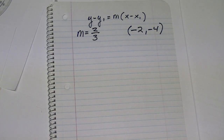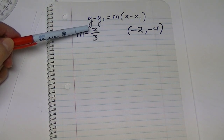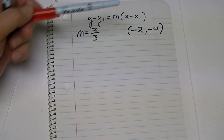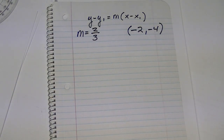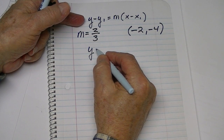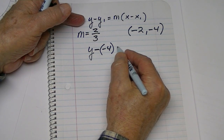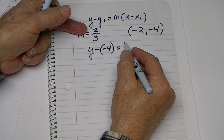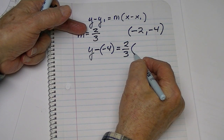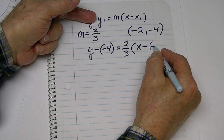We'll do another example of point-slope form, but this time the slope is a fraction — two-thirds — and our ordered pair has both negative values for x and y. So let's do our substitution: we put y minus, and since our y term is a negative value, I put that in parentheses. Our slope is two-thirds, then x minus, and since our x term is also negative, I put that in parentheses as well.